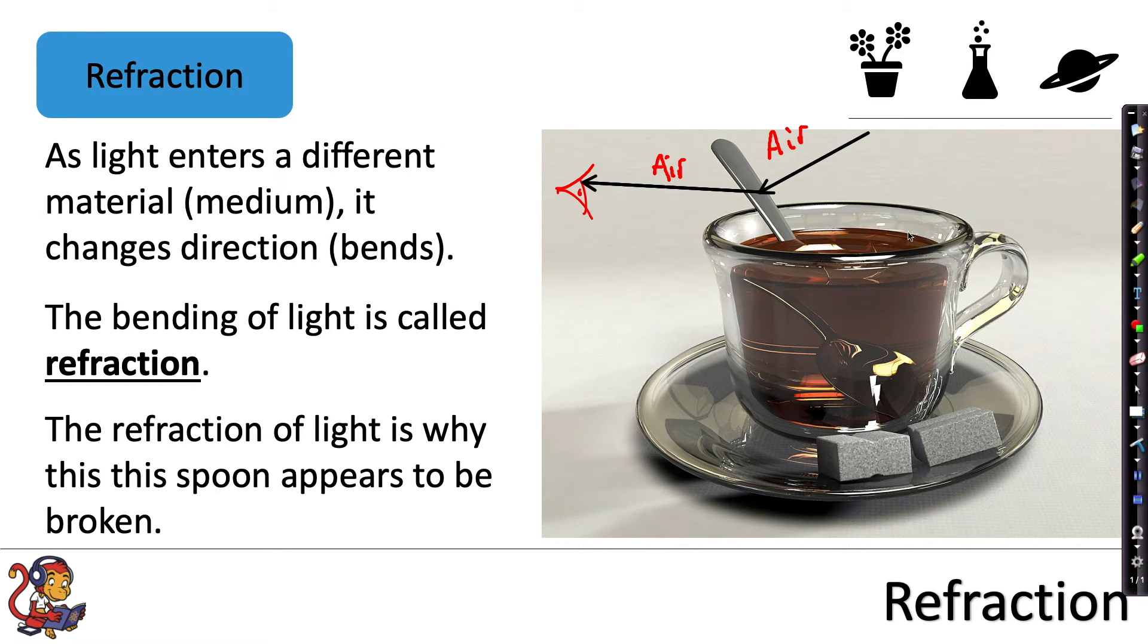However, as the light goes in to reach the bottom of the spoon, at this point here it meets a boundary between two different mediums. So it first of all travels through air, but then it travels into a different medium in this liquid.